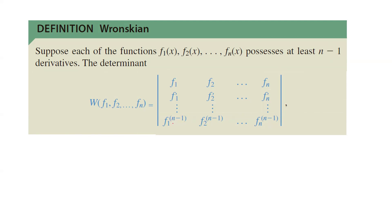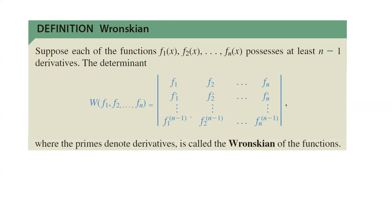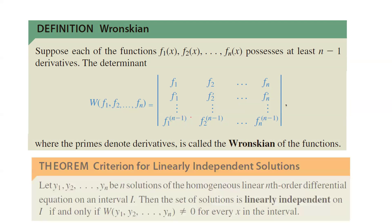This is important. Students usually make a mistake and take the last derivative of the function — this is wrong. You must stop at the (n−1)th derivative. After finding the Wronskian, which is the determinant, if the Wronskian is non-zero, then you have linearly independent functions.